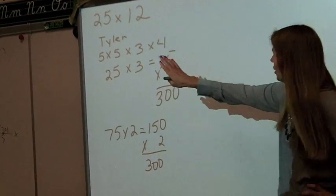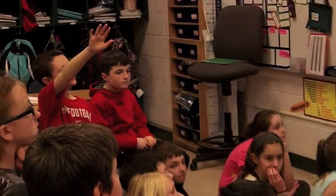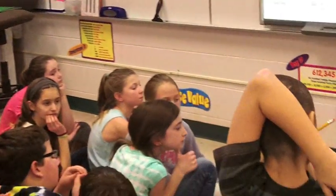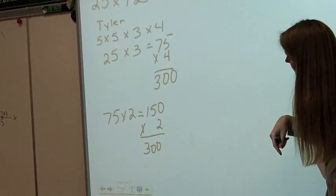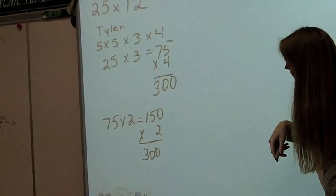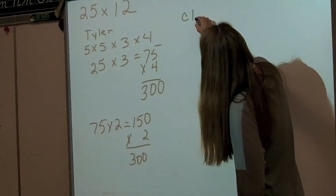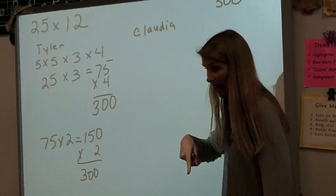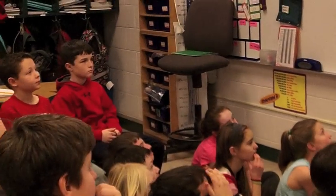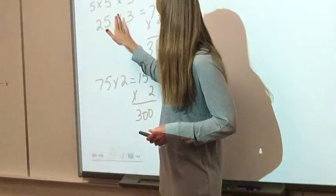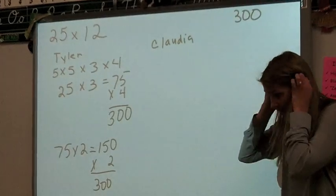Now, question. Does anybody have a question for Tyler to make it a little bit more efficient? Or a strategy you can make? Claudia? Well, when you did the three times four, and then you did 25, and 25 times four got me to 100. Oh, okay Claudia, go ahead and explain that to me. That's what I would do. How many people agree with that? I was going to say, you wouldn't even have to decompose this to five times five. You could just do 25 times three times four, right? Okay, go ahead Claudia.